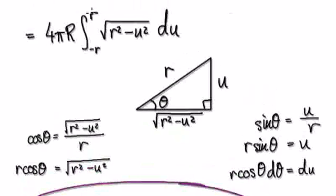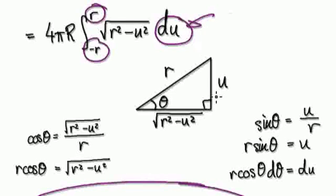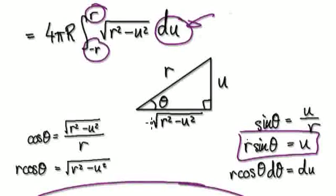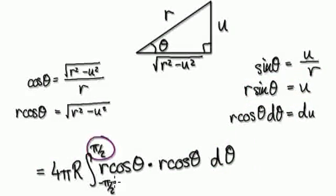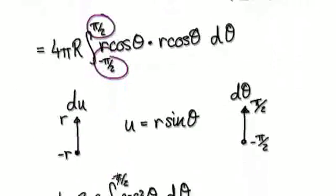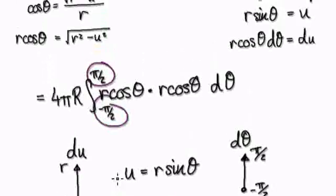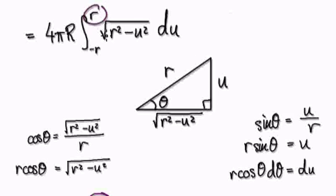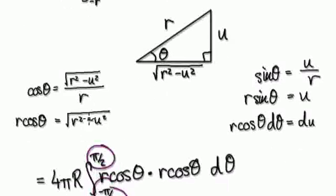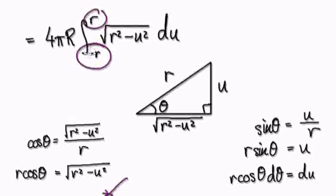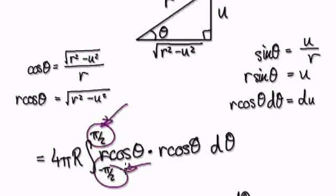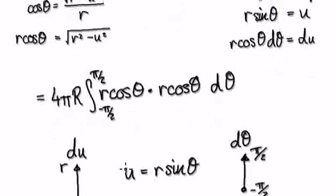Don't forget you need to make the adjustment to the limits as well. Because here you are living in the du world and you make the substitution, you are now in the d-theta world. So you need to make the adjustment to the limits. Making the adjustment: r here will then become positive pi over two, and negative r here will then become negative pi over two.